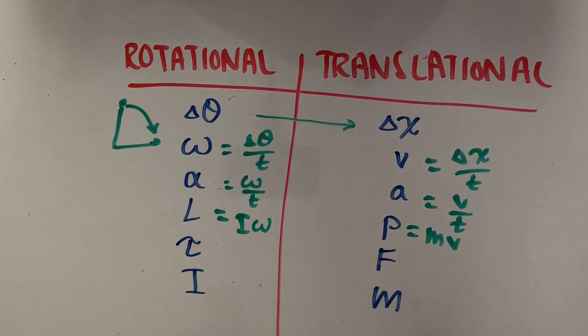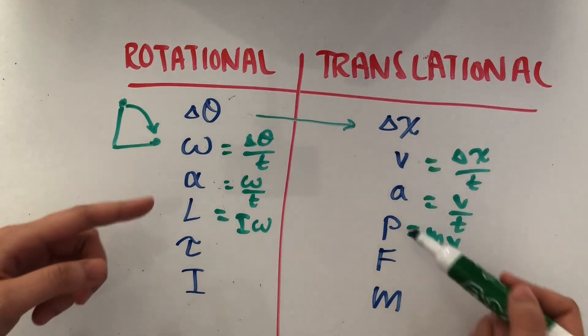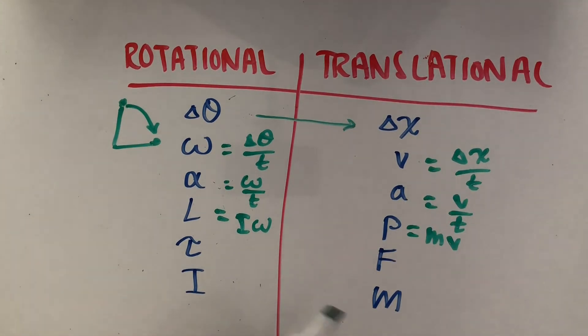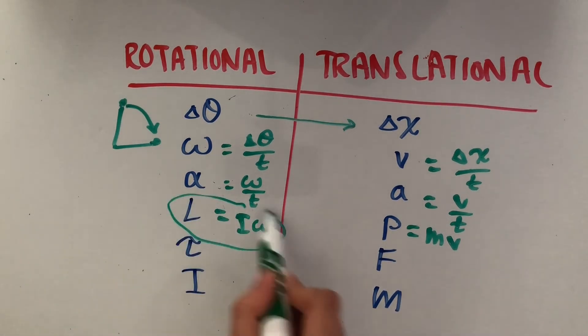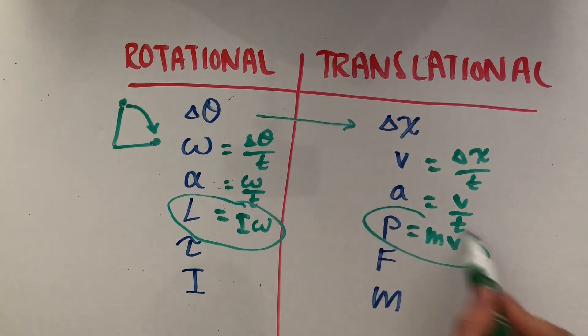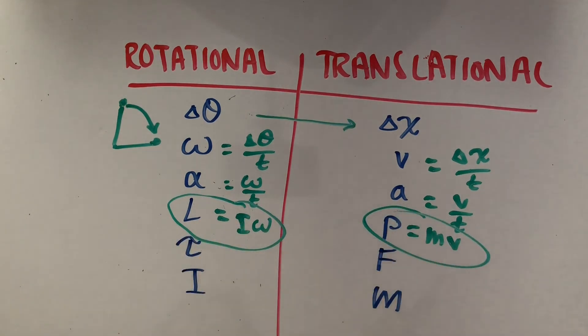The moment of inertia I is kind of like mass m. They're not as similar to each other as the other variables are, but they can be compared when looking at the equations for rotational and linear momentum.